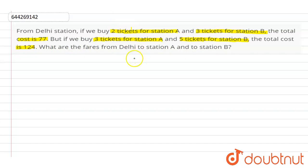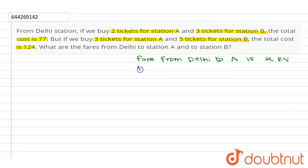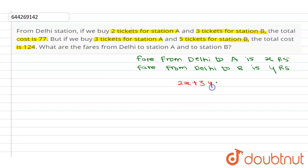Let us consider fare from Delhi to station A is x rupees and fare from Delhi to station B is y rupees. According to the first condition, 2 tickets for station A and 3 tickets for station B cost 77 rupees. Therefore we can write: 2x + 3y = 77.